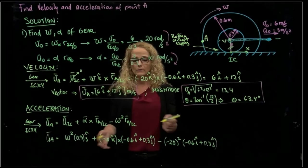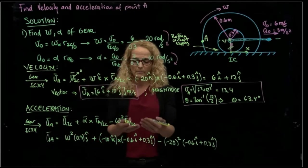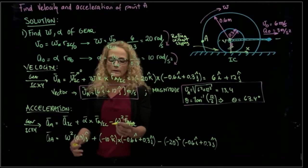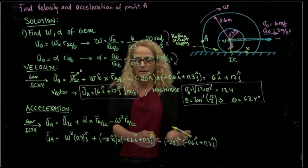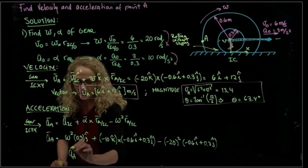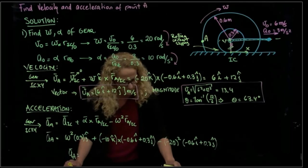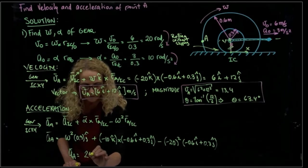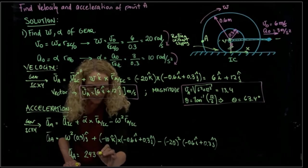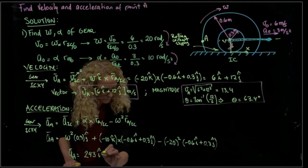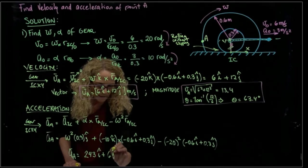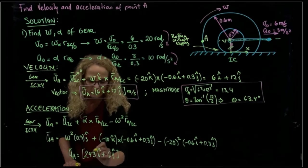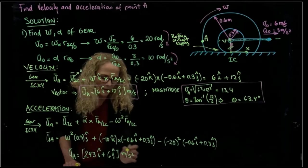Well, we do our cross product and we put them together and we put together the I's and the J's. And then we got the acceleration in A would be equals to, I'm going to put that here, 243i plus 6 in J. That's my vector form, meters over seconds squared.